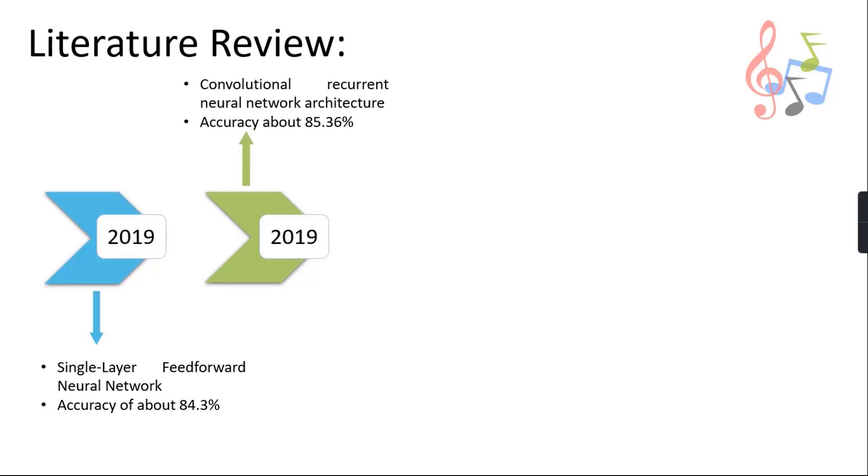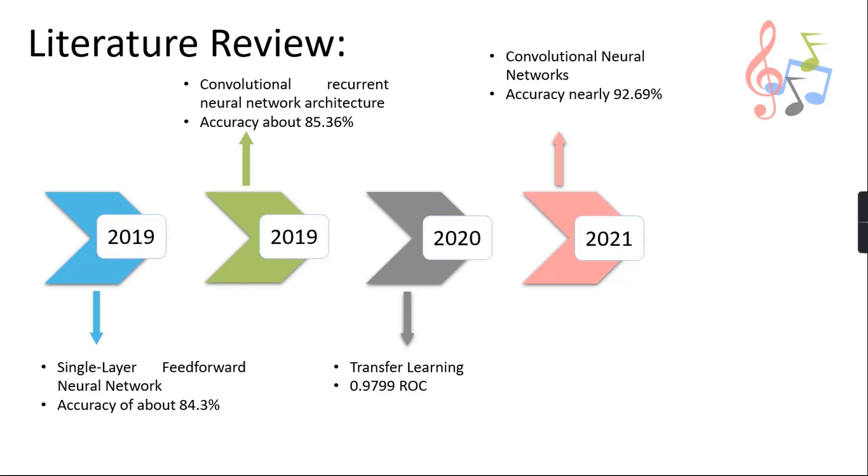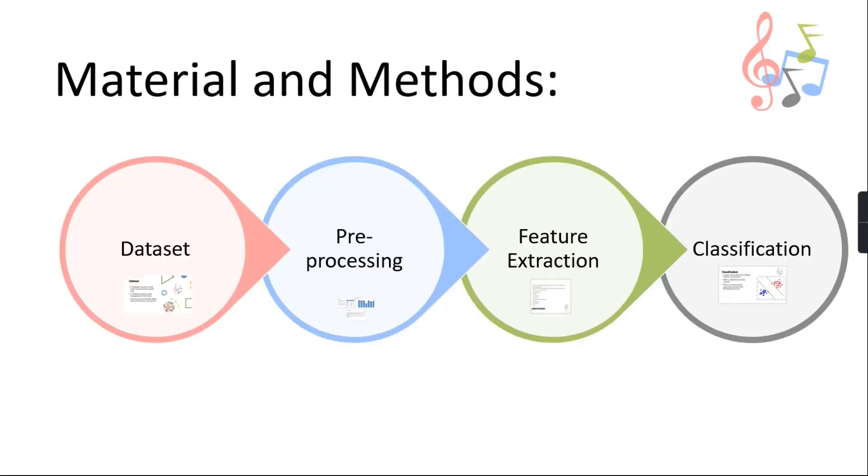In 2020, 0.9799 ROC has been achieved using transfer learning. And in this year 2021, accuracy about 92.62% has been achieved using convolutional neural networks. And finally in 2021, the accuracy about 66% has been achieved using deep learning convolutional neural networks.